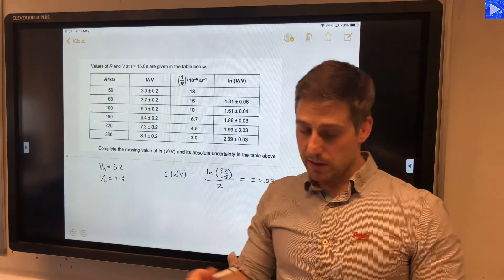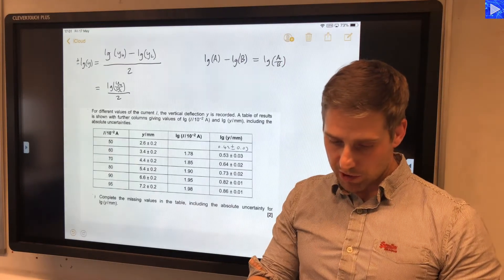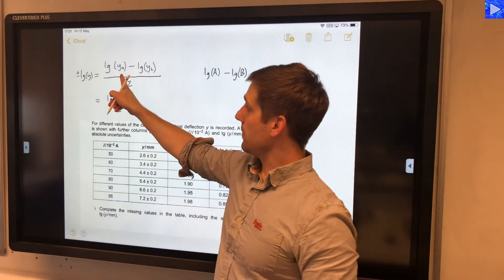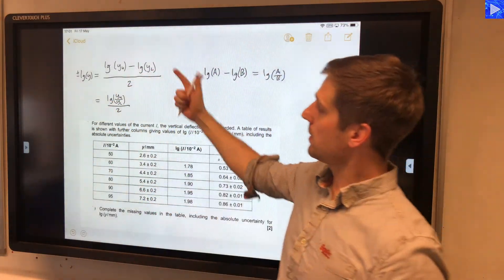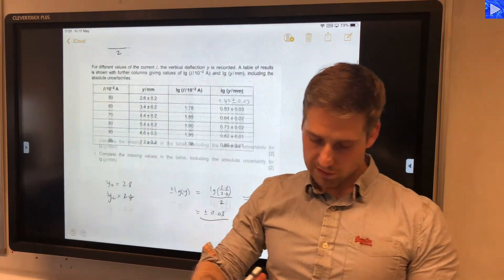...plus or minus 0.07 to one significant figure. So it's 0.0667 and so on. And if you were to verify this by actually doing the full calculation, which is log of the upper value minus the log of the lower value, you'll get exactly the same number. And then divide it by 2. It's all the same.